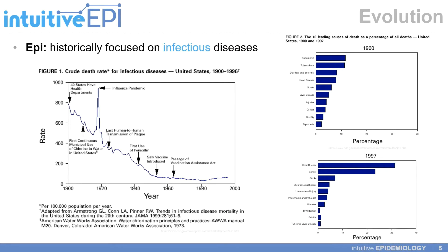Epidemiology has historically focused on infectious diseases, which makes a lot of sense when looking at the figure on the right-hand side, which outlines the 10 leading causes of death as a percentage of all deaths in the United States. In 1900, pneumonia, tuberculosis, and diarrhea were the three leading causes of death.